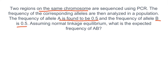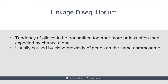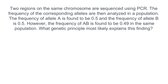Now that you understand linkage equilibrium, let's discuss linkage disequilibrium. Linkage disequilibrium is the tendency of alleles to be transmitted together more or less often than expected by chance alone. This is usually caused by close proximity of genes on the same chromosome. Two regions on the same chromosome are sequenced using PCR. The frequency of the corresponding alleles are then analyzed in a population. The frequency of allele A is found to be 0.5 and the frequency of allele B is 0.5. However, the frequency of AB is found to be 0.49 in the same population.